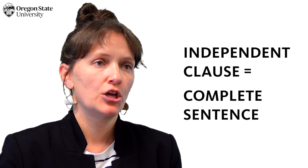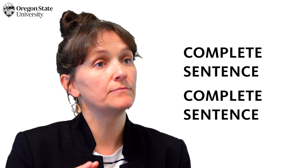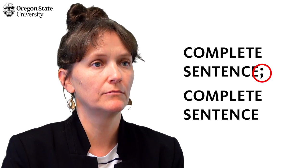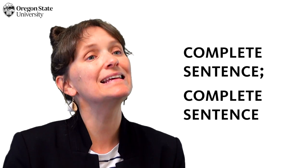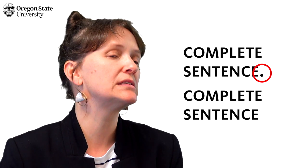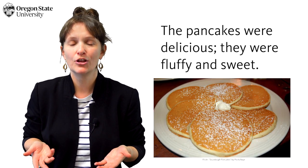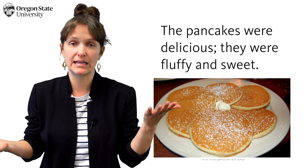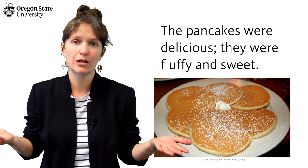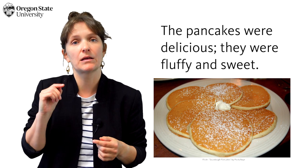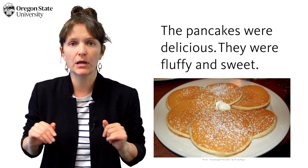Independent clause is grammar speak for complete sentence. So if you have two complete sentences, long or short, you can choose to connect them with a semicolon. You should be able to replace the semicolon with a period, and it would still make sense. Here's an example: 'The pancakes were delicious; they were fluffy and sweet.' You can see that each half could stand alone as a complete sentence — I could replace the semicolon with a period and it would still make perfect sense.